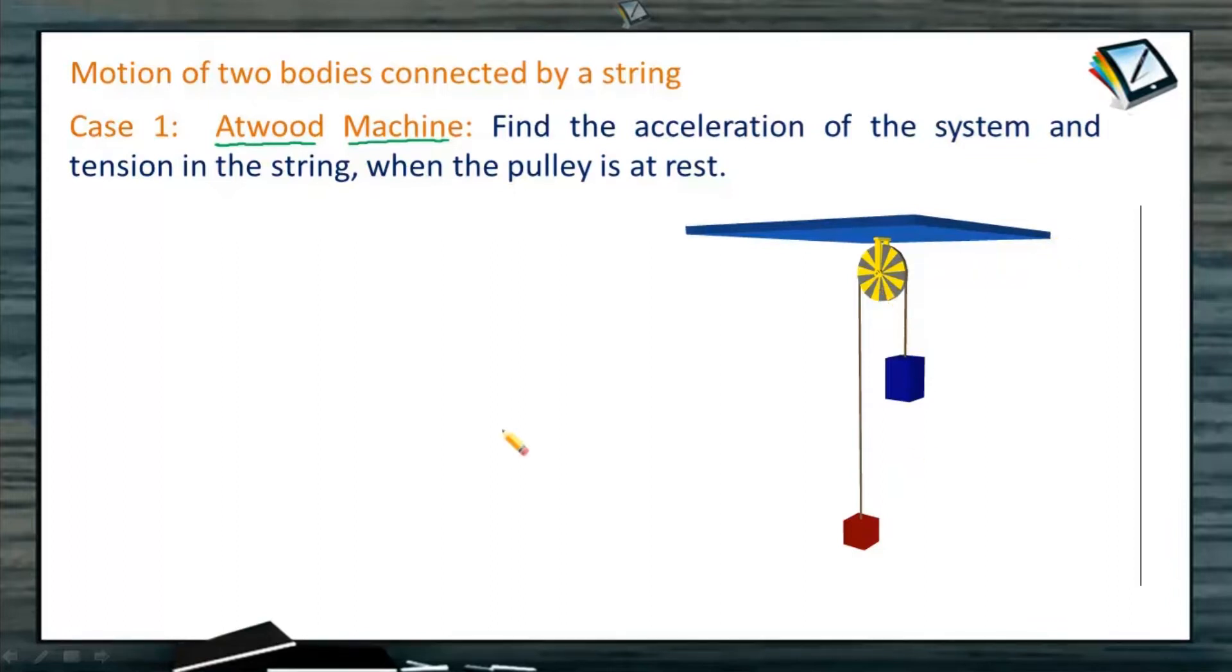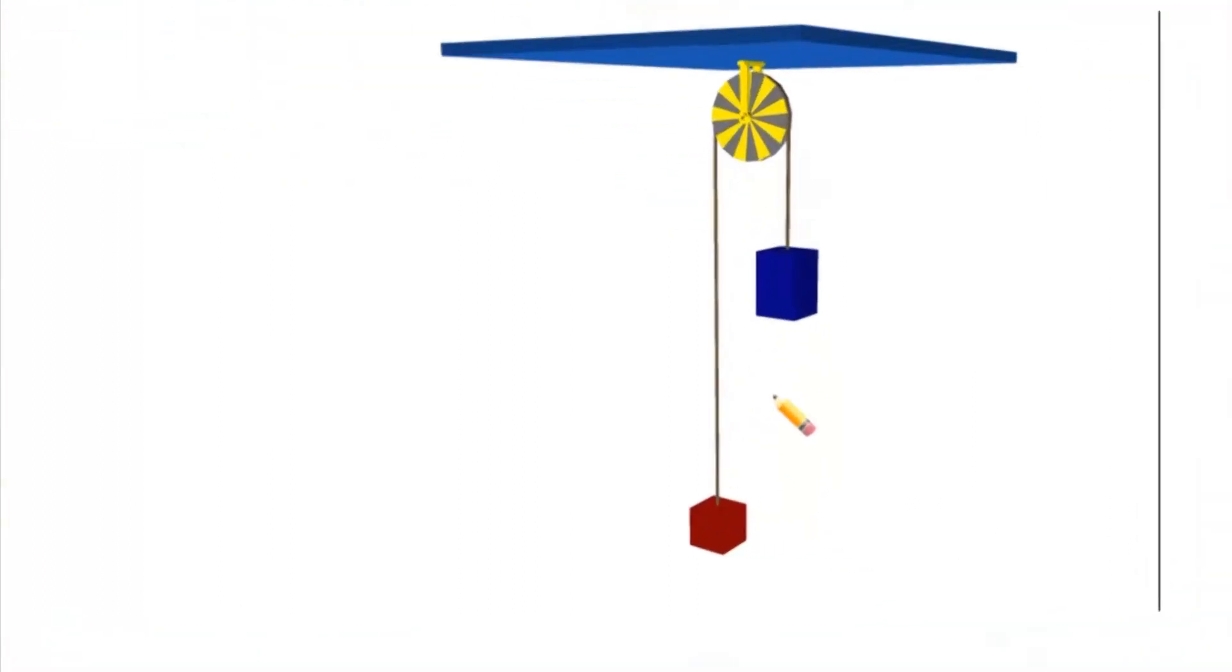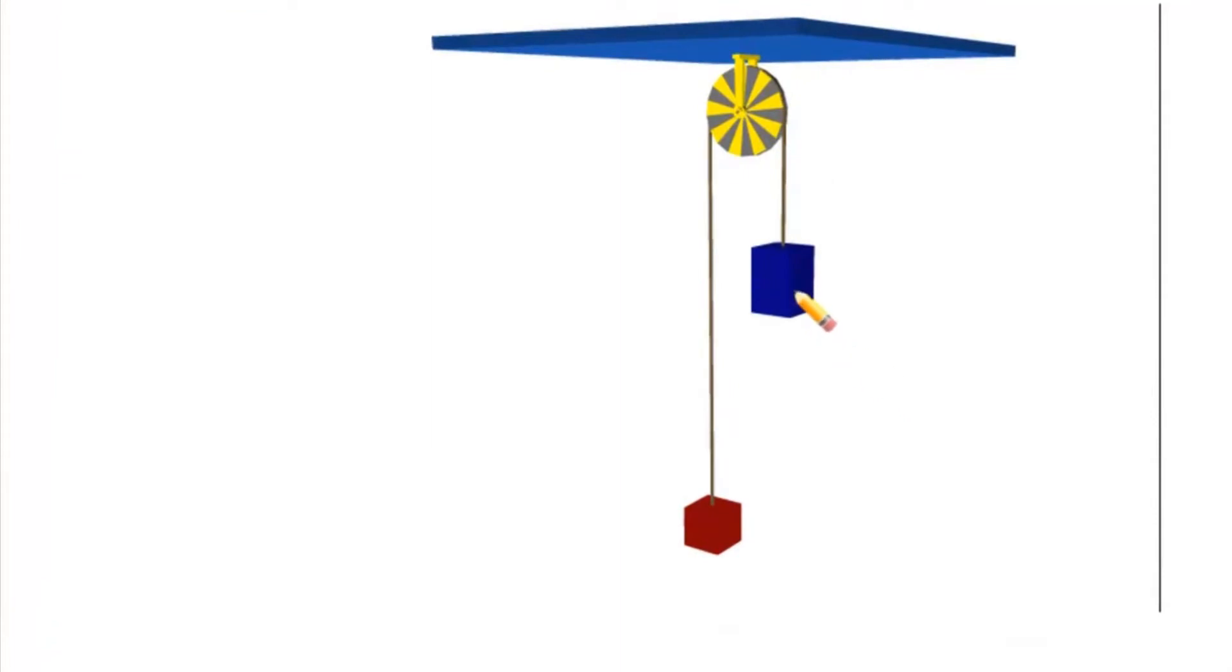Now, only mass M1 and mass M2 are in motion. Pulley system is at rest. So let us see how the two bodies are going to move. As we see here, the pulley is only in rotation and blue colored body is coming down, red colored body is moving up.